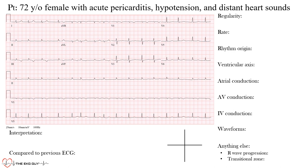The first thing we want to look at — and this is the approach we've been using here — is looking at regularity. Is the rhythm regular or irregular? If it's regular we can stop there; if it's irregular, is it irregularly irregular or regularly irregular? So in this portion, probably the best leads to use are down here.